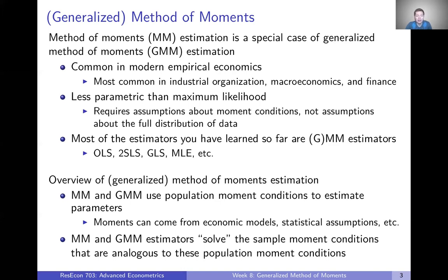One reason GMM is so common is that it's less parametric than maximum likelihood estimation. Method of moments or GMM only requires assumptions about moment conditions of our data, not assumptions about the full distribution of our data. So we actually call this a semi-parametric estimator, as opposed to a fully parametric estimator like maximum likelihood. It also turns out that most estimators you've learned — OLS regression, two-stage least squares, generalized least squares, even maximum likelihood — are all special cases of GMM estimators. GMM is a really broad general class of estimation that encompasses a lot of what you already know.